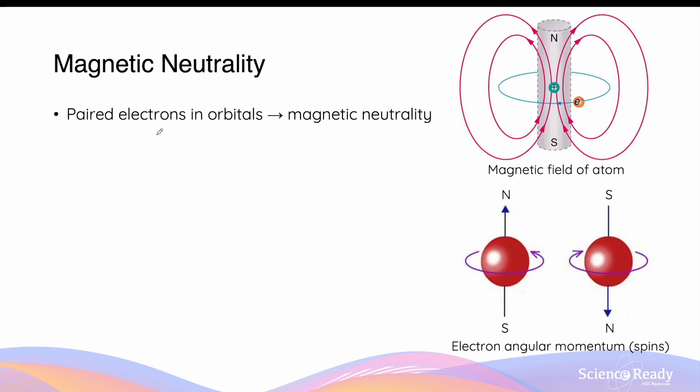In the orbitals of most atoms, electrons are paired such that the direction of their spins and magnetic moments are opposite to one another. This effectively cancels out the magnetic moments, resulting in an atom that is magnetically neutral.